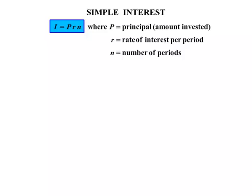So that formula there, I equals PRN, you're going to use that for simple interest questions, sometimes referred to as flat interest. It means the same thing.